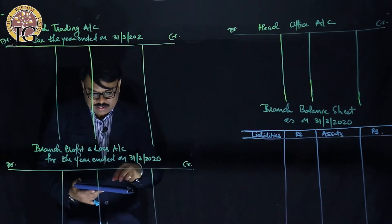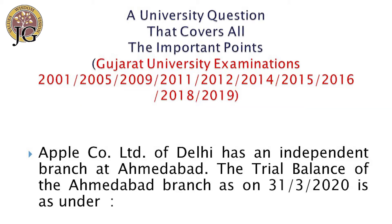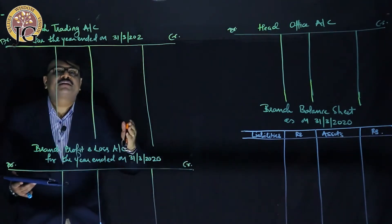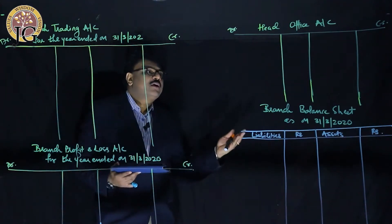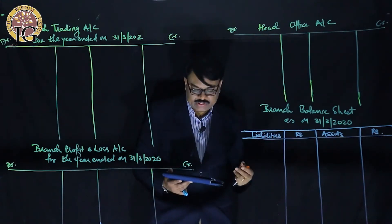Let us take a look at the example that has been asked for so many years in university exams. Apple Company Limited of Delhi has an independent branch at Ahmedabad, and the trial balance of the Ahmedabad branch is as on 31st March 2020. I have prepared all four accounts on the board: trading account, profit and loss account, head office account, and branch balance sheet.